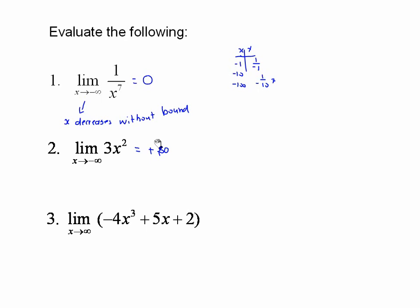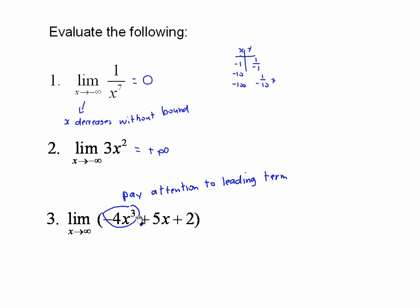The next problem brings up a new issue — we have a cubic polynomial. As x gets bigger and bigger, pay attention to the leading term. I don't care about the 5x or the 2; I really just care about the first x cubed, because that's the one dictating what's happening. In this case, x is multiplied by negative 4, so we end up getting a negative value, meaning y gets smaller without bound.